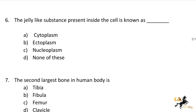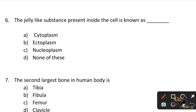Next question: The jelly-like substance present inside the cell is known as — Option A: Cytoplasm. Option B: Ectoplasm. Option C: Nucleoplasm. Option D: None of these. The correct answer is Option A: Cytoplasm.